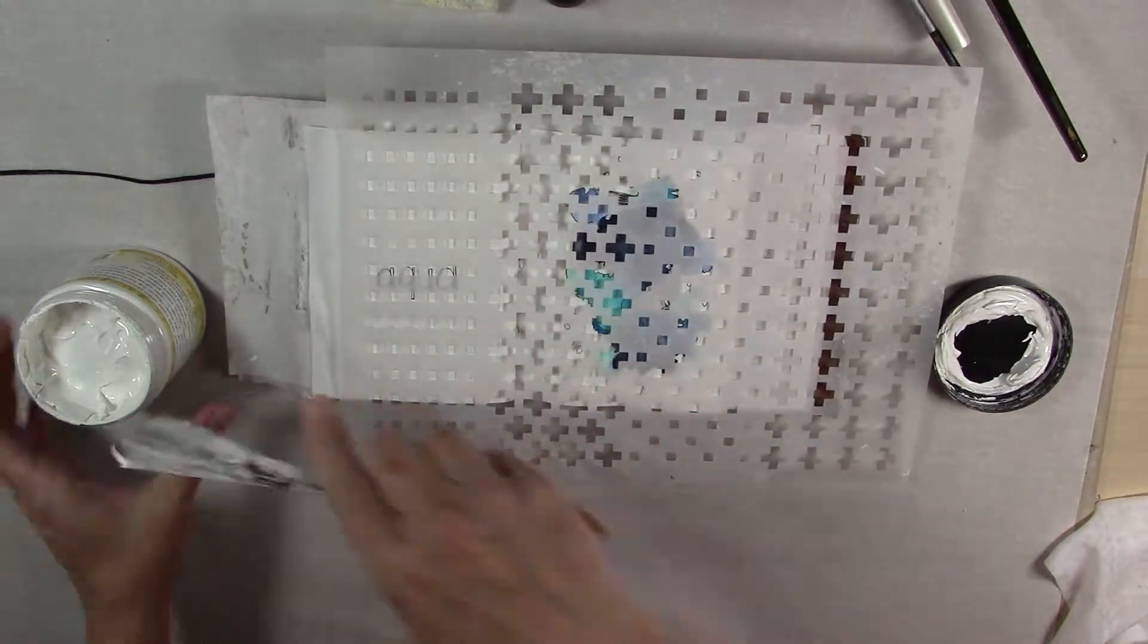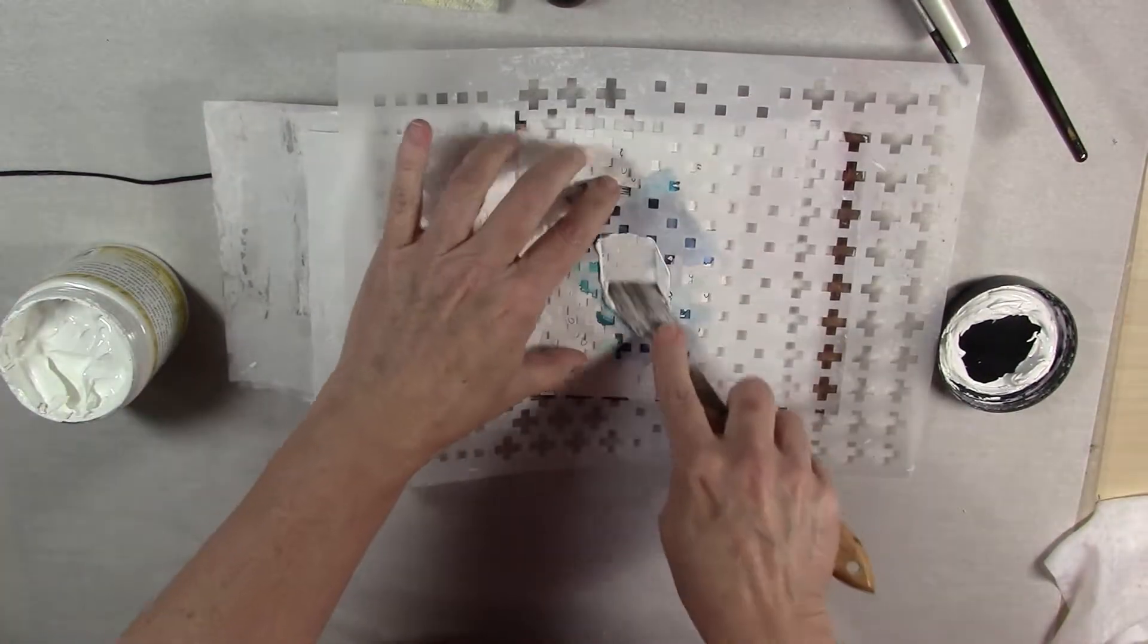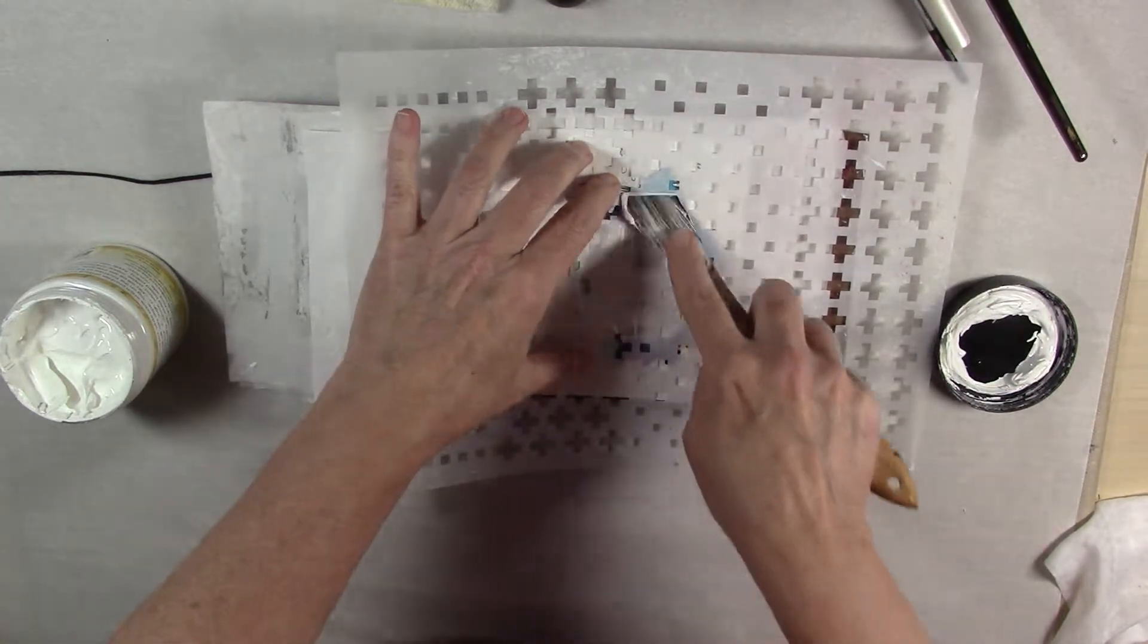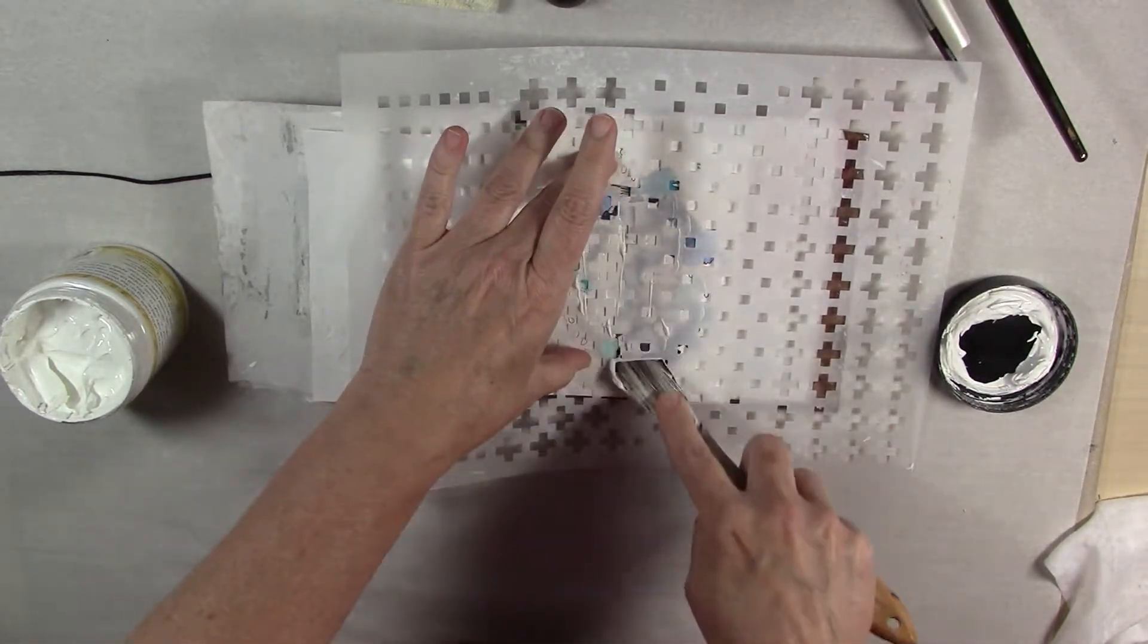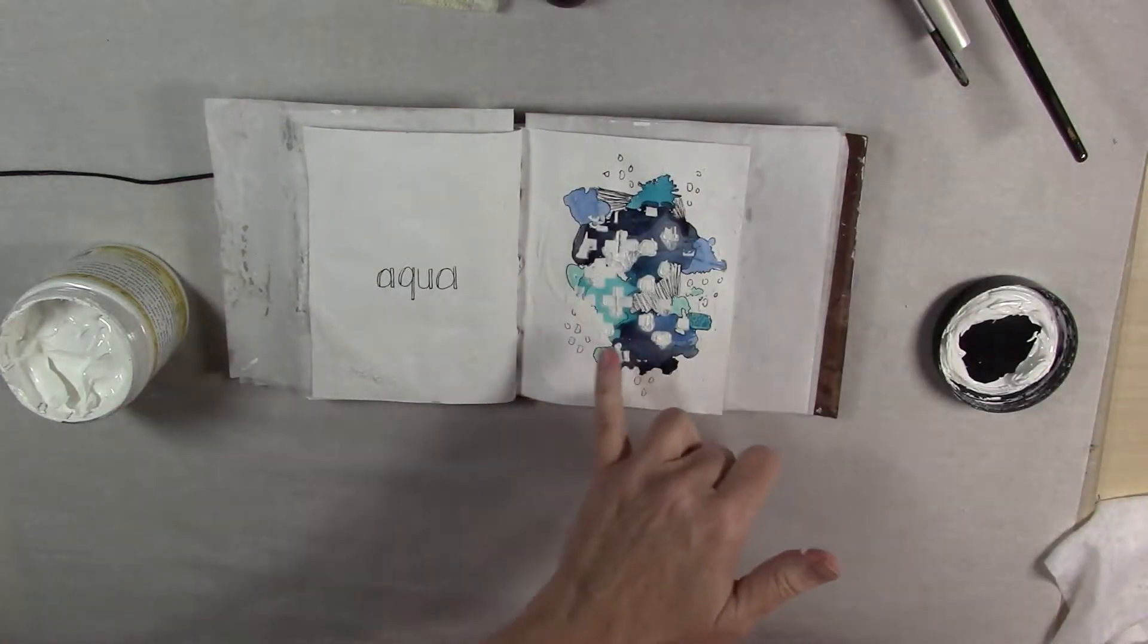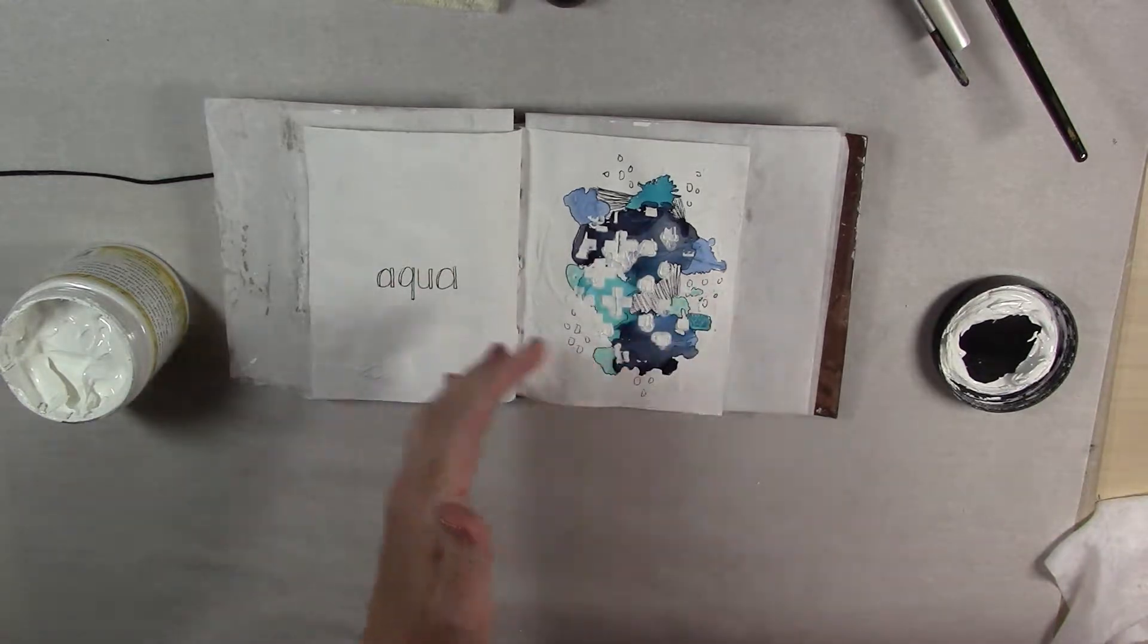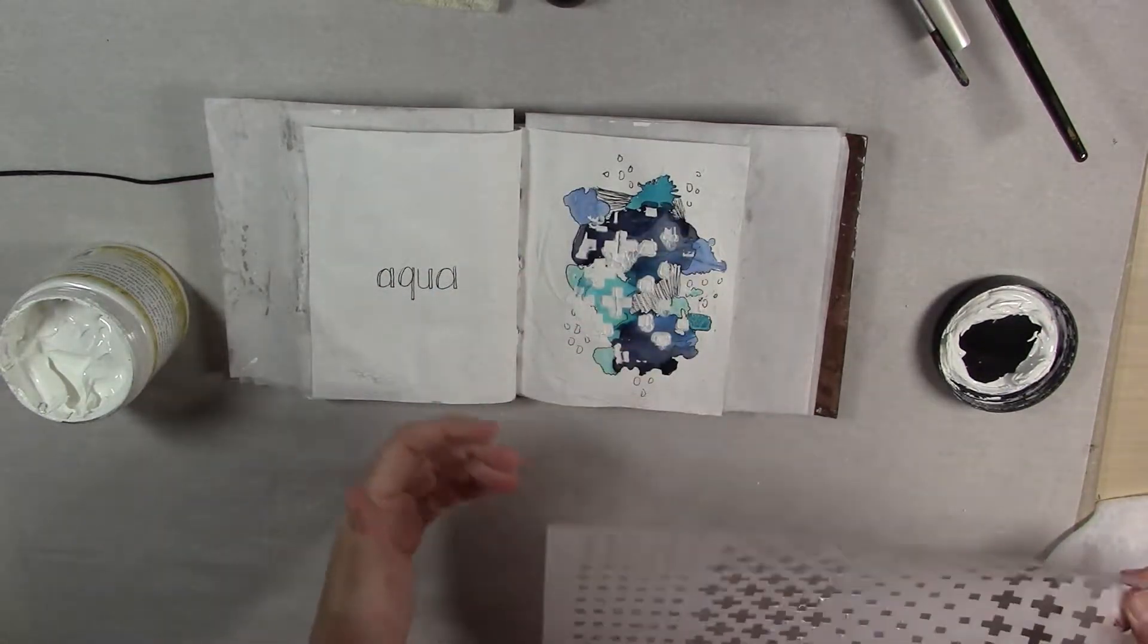So I'm going to just kind of randomly decide, I think I'll go with the crosses on the left side. Let's take some of this and I'm just going to go ahead and apply it on this page. Now many of these pages, you'll see here, it doesn't go on super clean. I'm okay with that. I kind of like how that looks because when I do the next step you'll see what I mean.